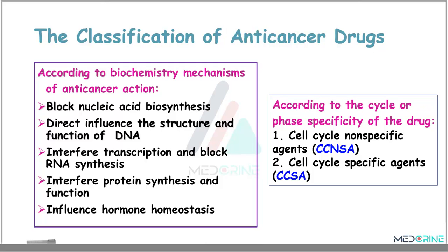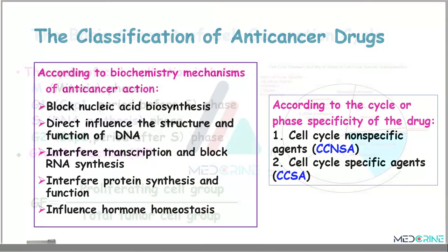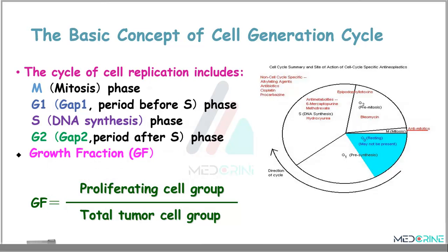The last classification of anticancer drugs is based on cycle or phase specificity. In this classification, we have two types: cell cycle nonspecific agents and cell cycle specific agents. The cycle of cell replication includes the M phase, which is the mitotic phase; then the G1 phase, or GAP1 phase, which occurs before the S phase; the S phase, in which DNA synthesis occurs; and the G2 phase, or GAP2 phase, which is the period after the S phase.